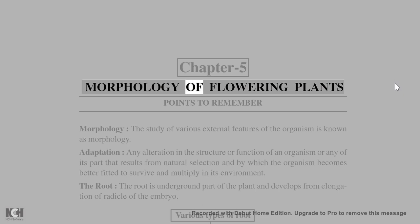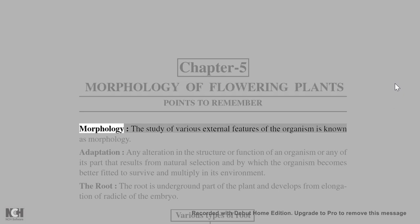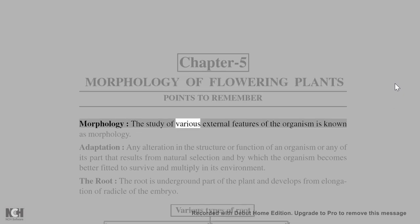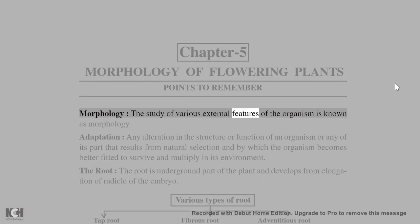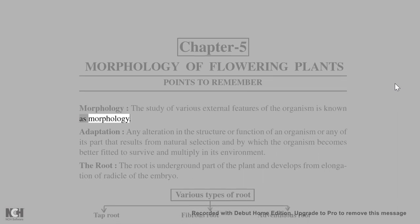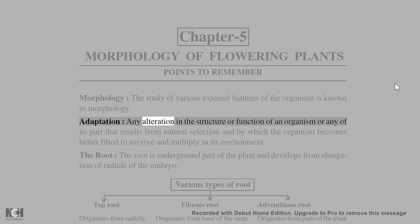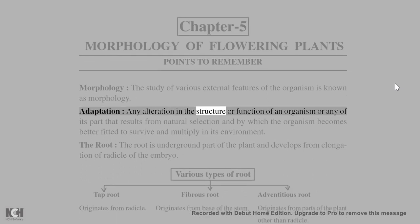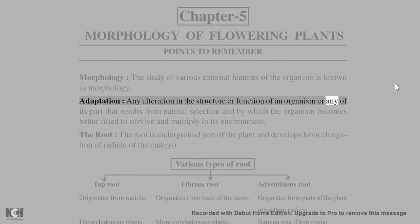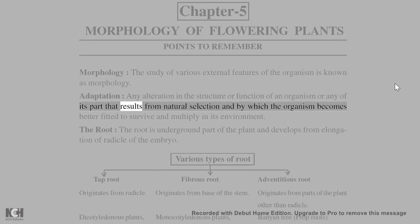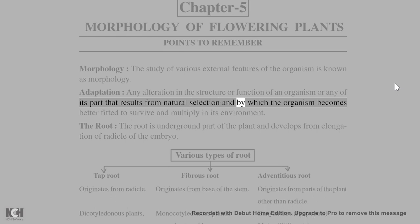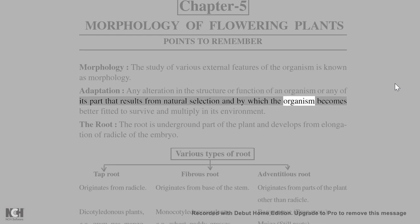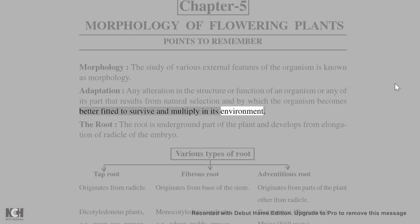Chapter 5: Morphology of Flowering Plants. Points to remember: Morphology is the study of various external features of the organism. Adaptation is any alteration in the structure or function of an organism or any of its parts that results from natural selection, by which the organism becomes better fitted to survive and multiply in its environment.